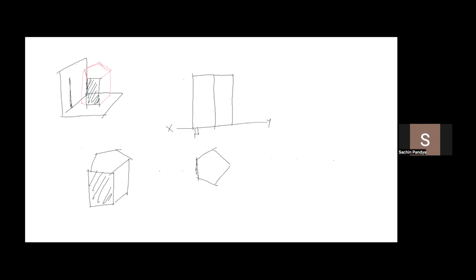Draw XY line, then draw a pentagon with one side perpendicular to XY. This is how the pentagon will come. Label A, B, C, D, E — A dash, E dash, B dash, D dash, C dash. This is front view, this is top view. Height is 40mm and base side is 25mm. Remember: the observer is watching from here and this side is perpendicular to VP, that is perpendicular to XY.